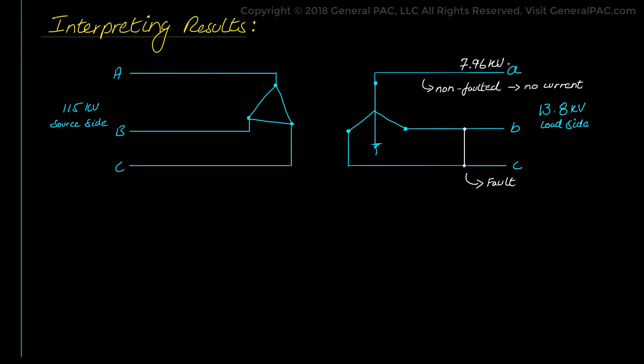However, for the faulted phases at the point of the fault, and now we are talking about phase B and phase C, the fault voltages are exactly half, meaning it is 7.96 kV divided by 2 or 3.98 kV phase voltages. Now this is an interesting characteristic which is quite common for a classic line to line fault in power systems.